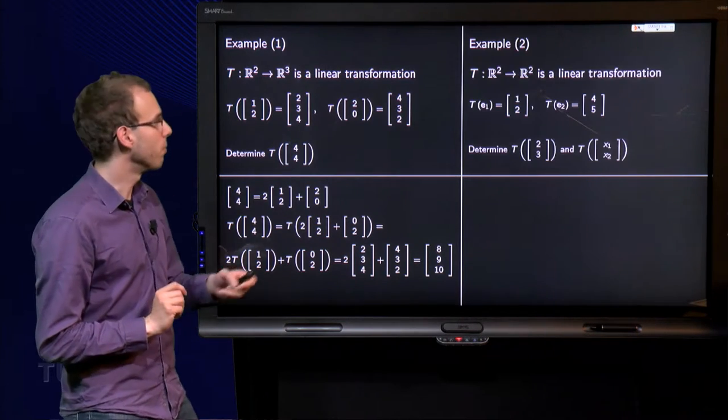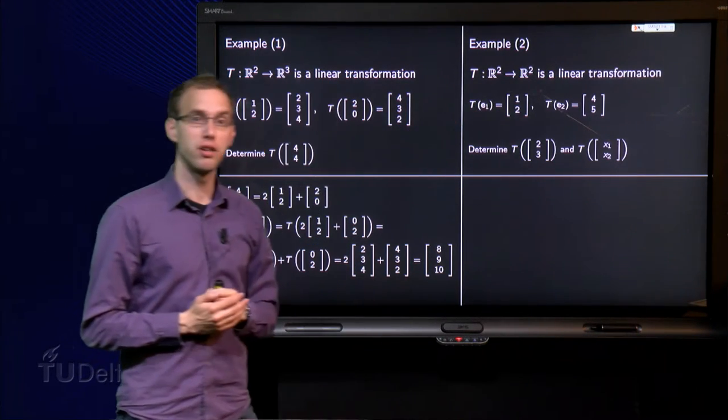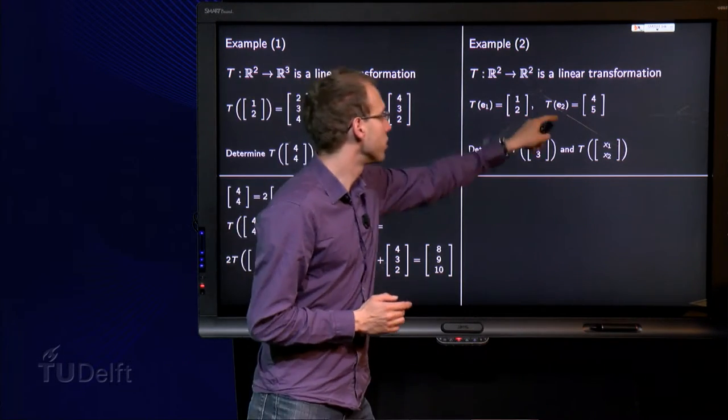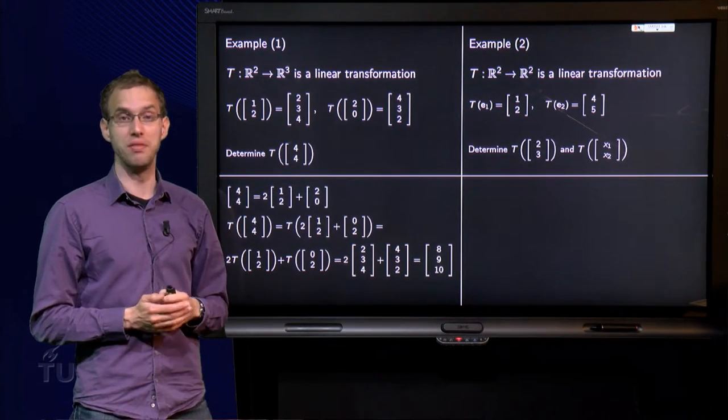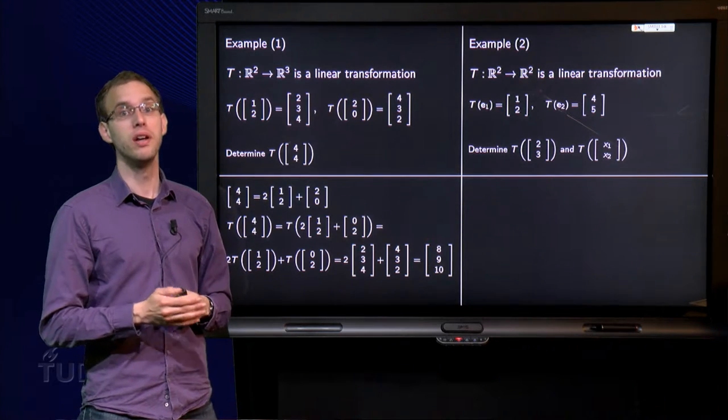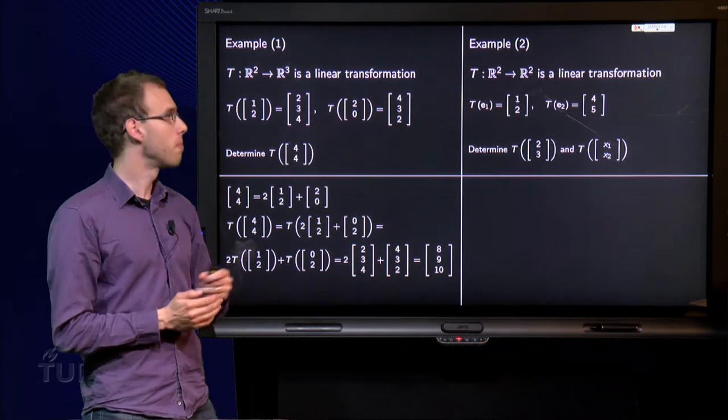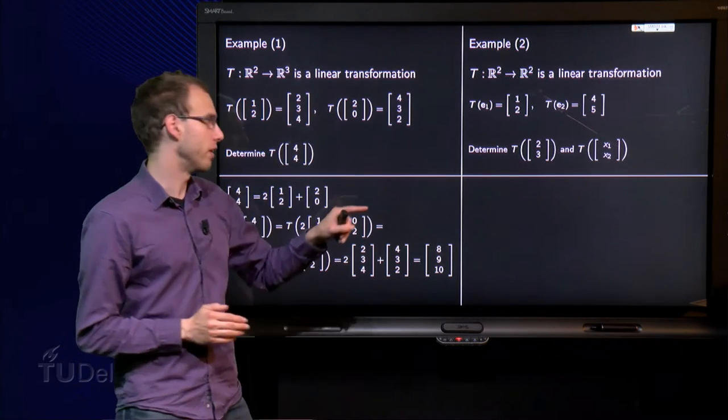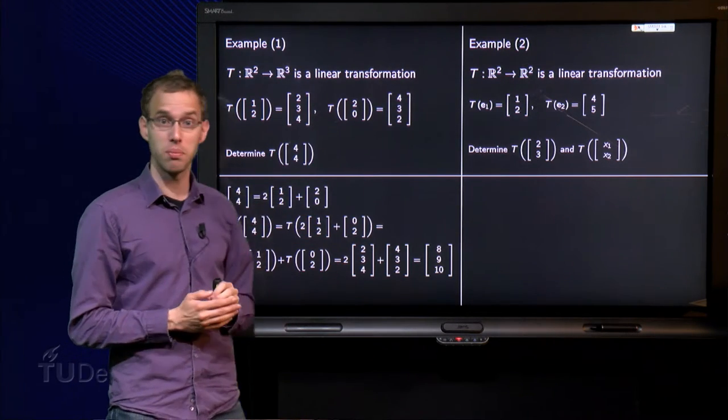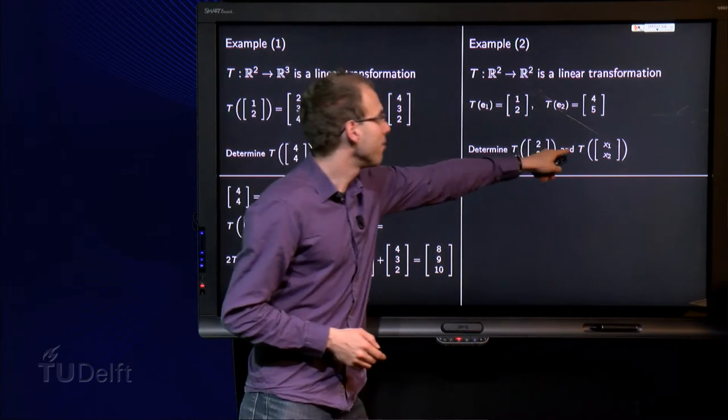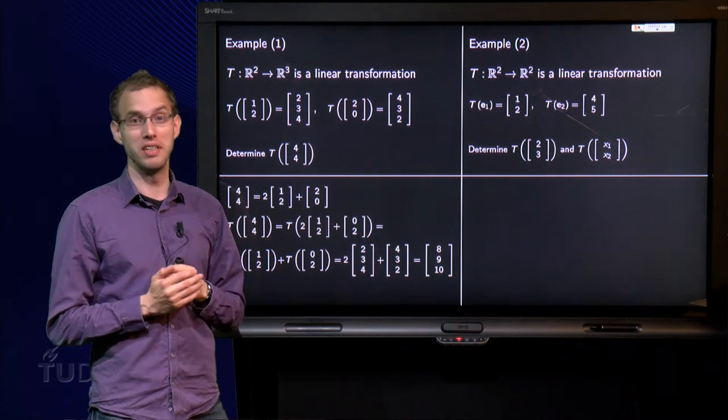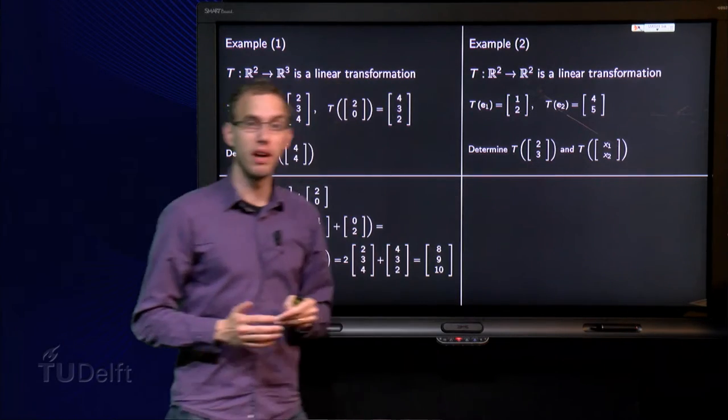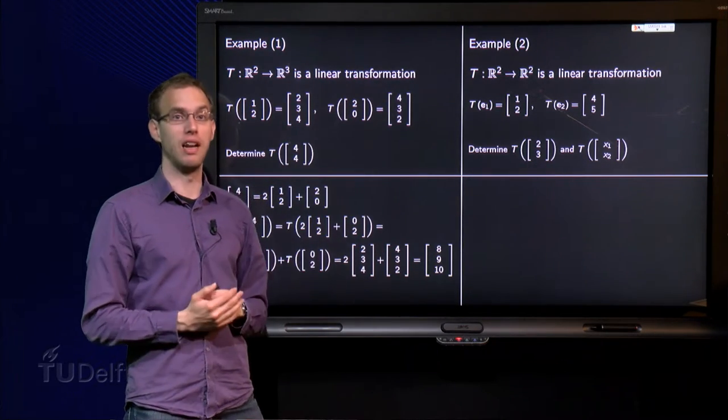Let's look at one other example. Transformation from R² to R². Again linear transformation. And now the images of E1 and E2 are given. E1 equals (1,0) and E2 equals (0,1). And now the question is, can I find the image of (2,3)? Wow, that really resembles this example quite a lot. And can we find the image of a general point, (x1,x2)? If we would be able to do this, then we can find the image for any point we like.